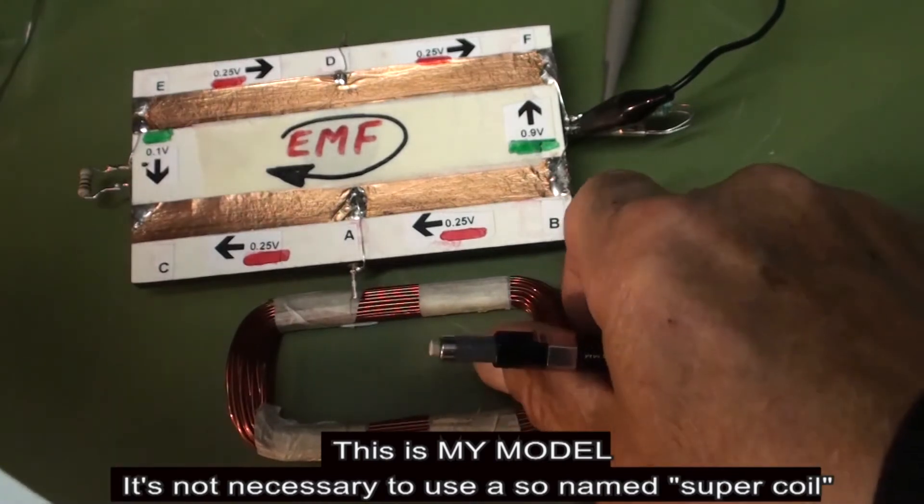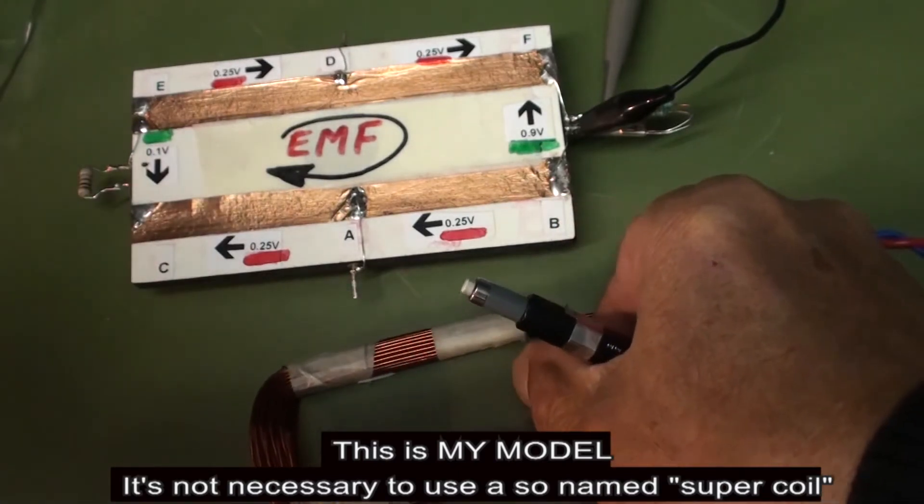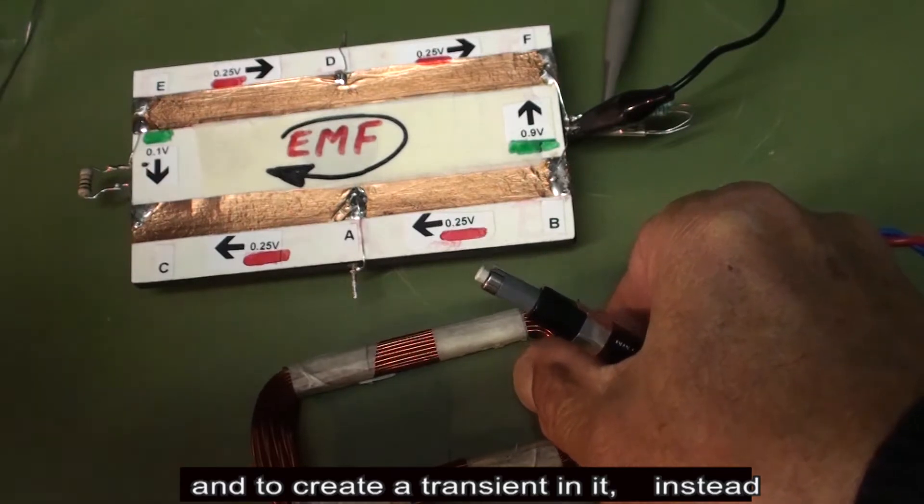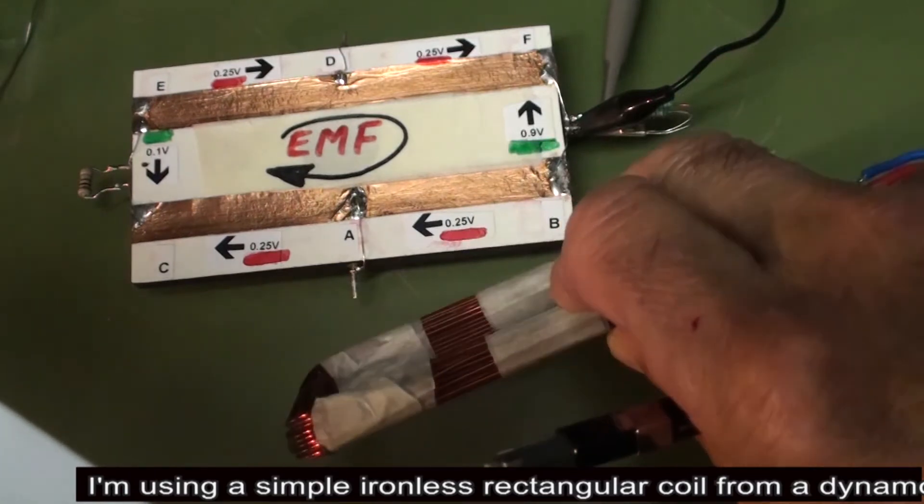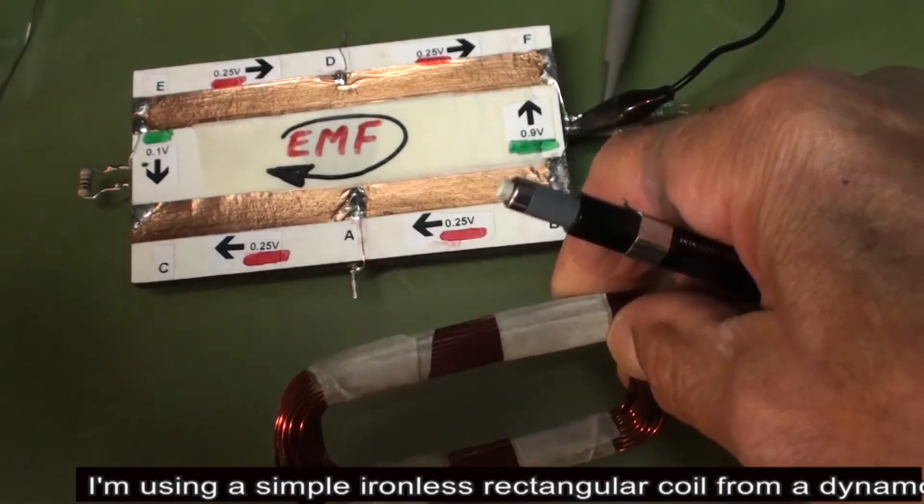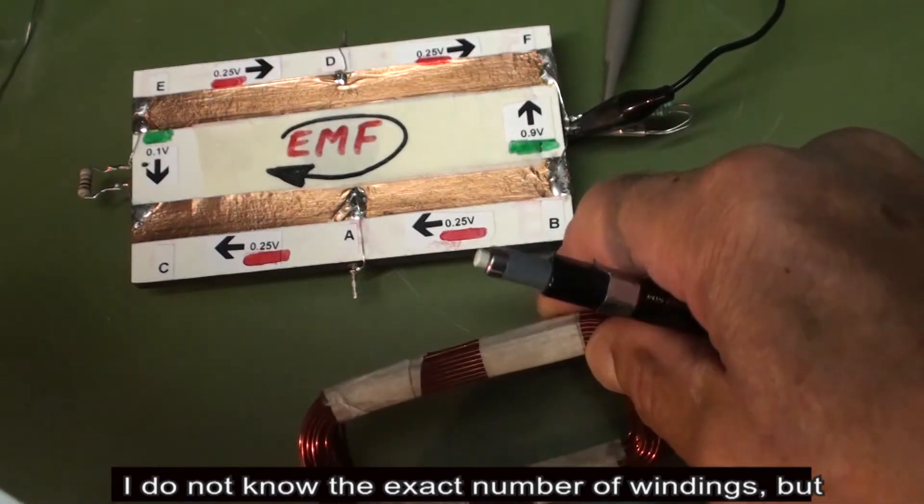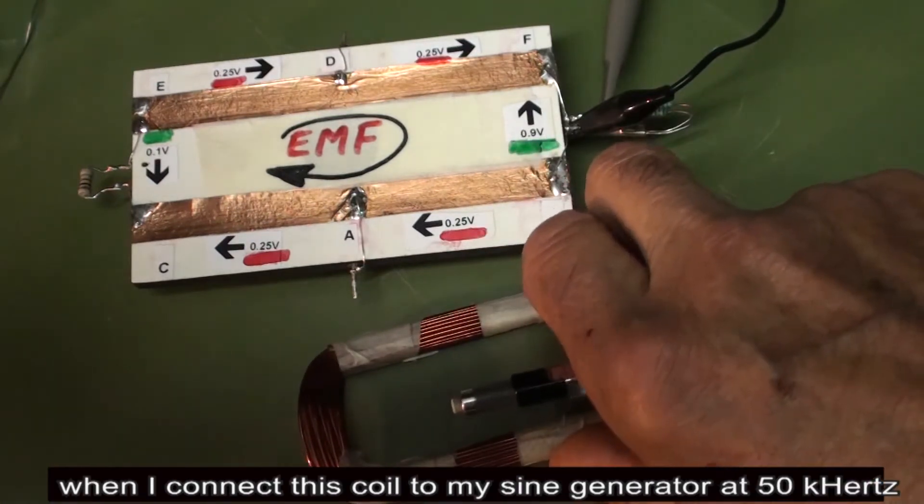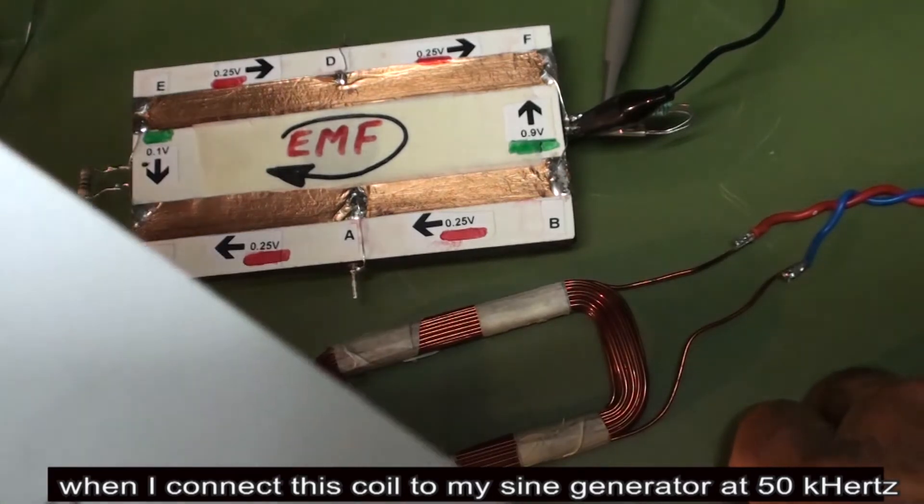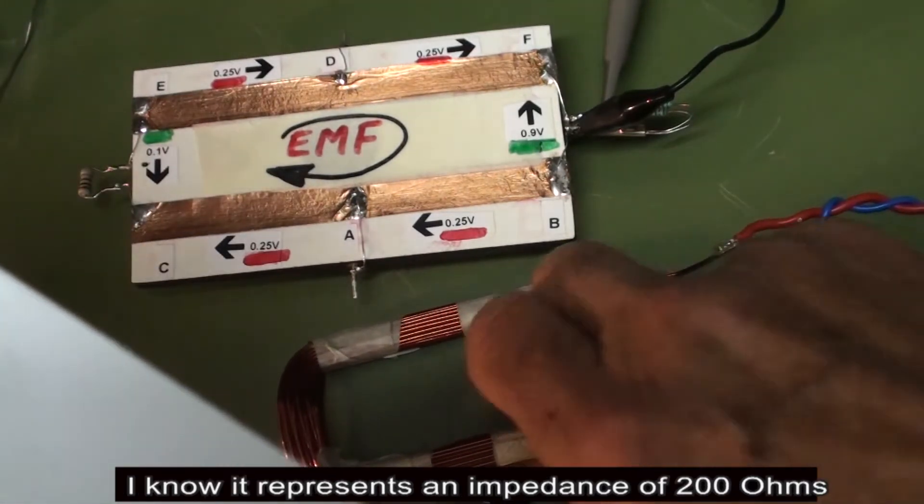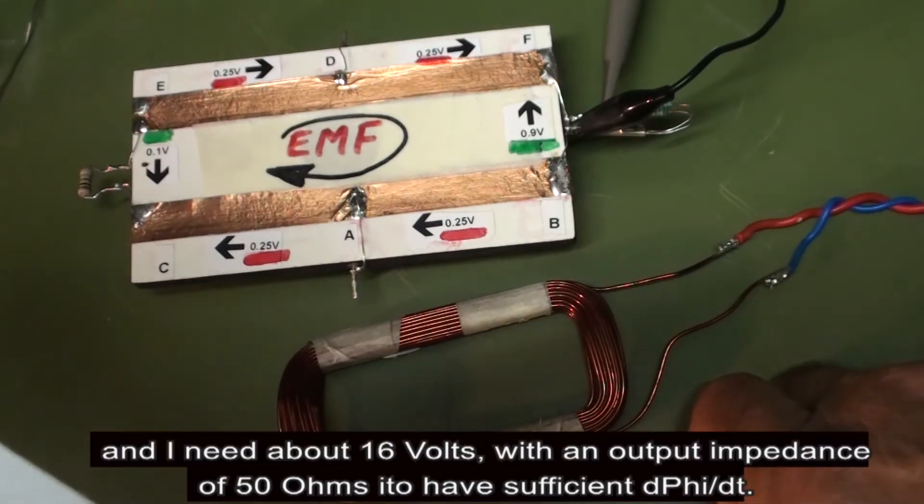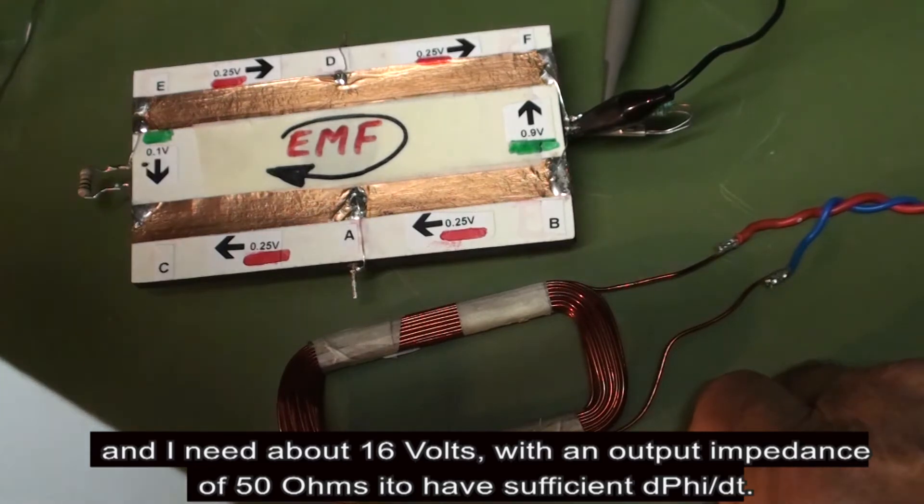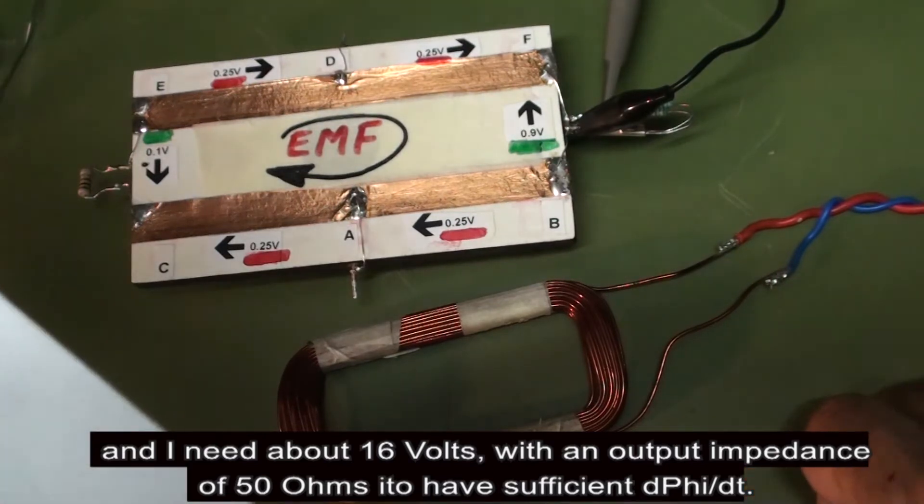It's not necessary to use a so-named super coil and create a transient in it. Instead I'm using a simple ironless rectangular coil from a dynamo. I do not know the exact number of windings, but when I connect this coil to my sine generator at 50 kilohertz, I know it represents an impedance of 200 ohms.